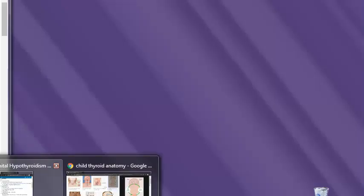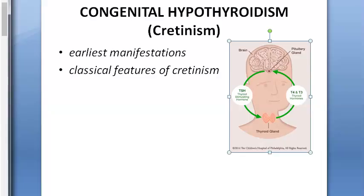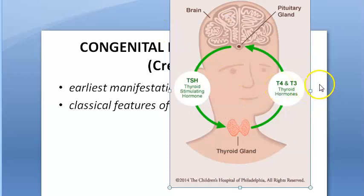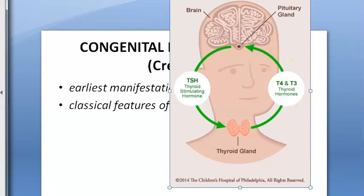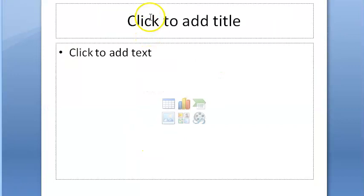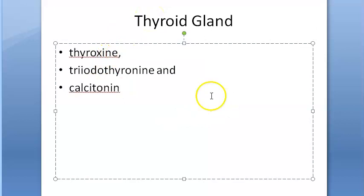By birth itself, this person has low thyroid levels. Thyroid hormone is critical for normal brain growth and myelination of the nerves. The thyroid gland is stimulated by TSH — thyroid stimulating hormone — released by the pituitary gland, and it produces T3 and T4.